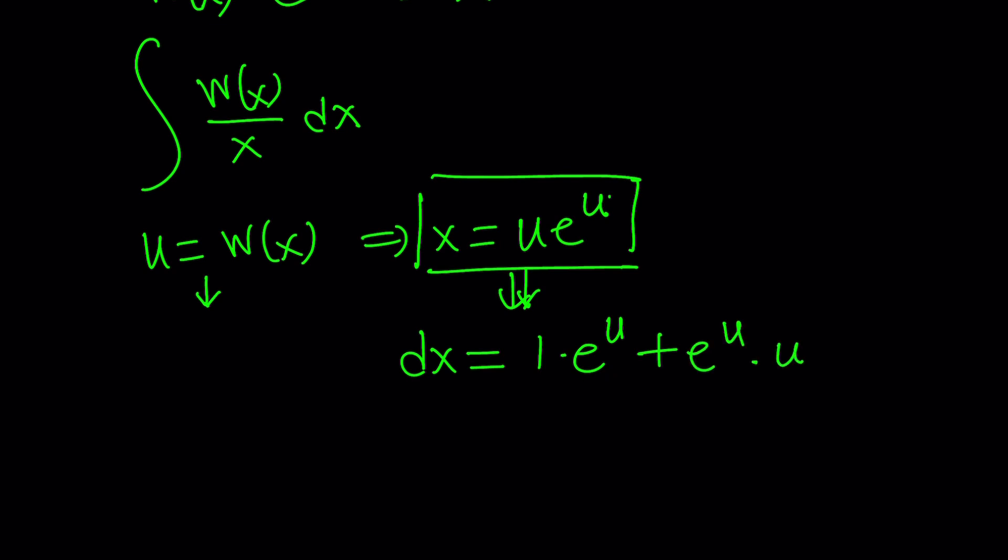By the way, this derivative is with respect to u. That's why you don't multiply by u prime. And instead, you multiply by du, which kind of becomes u prime, if you write it as du over dx. Make sense?